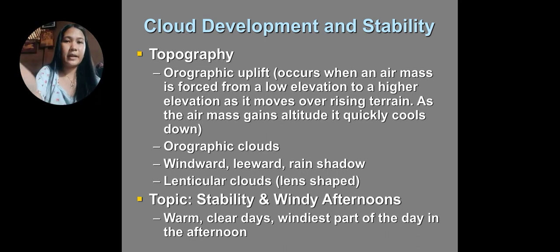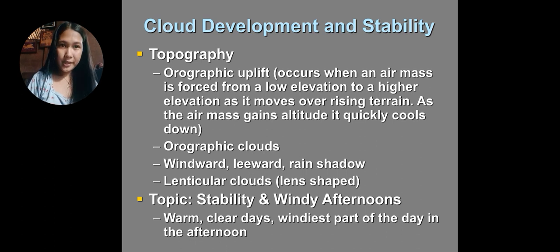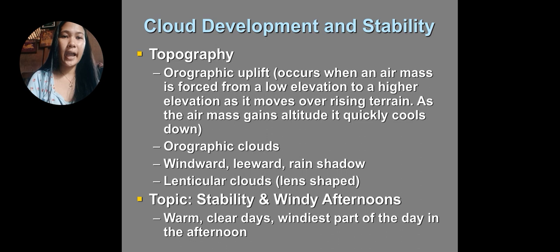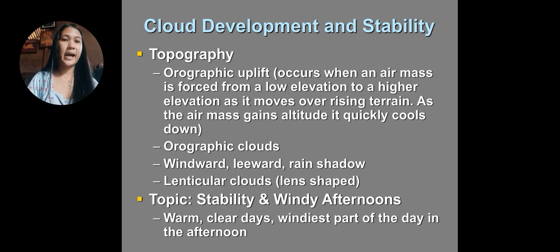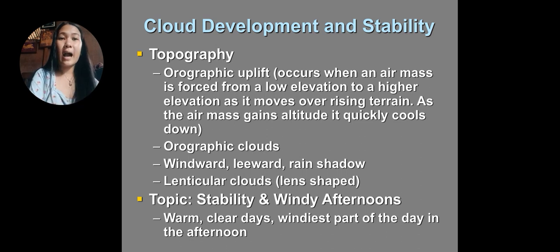How cloud development and stability relates to topography: orographic uplift occurs when an air mass is forced from a low elevation to a higher elevation as it moves over rising terrain. As the air mass gains altitude, it quickly cools down. This produces orographic clouds on the windward side, leeward side, rain shadow, and lenticular clouds.